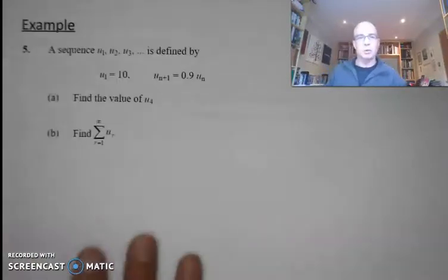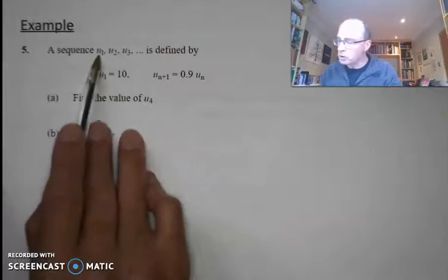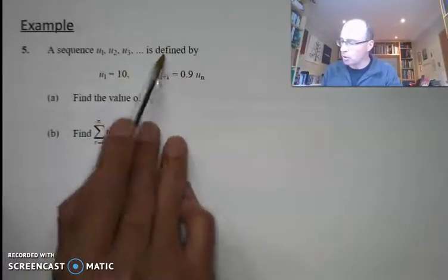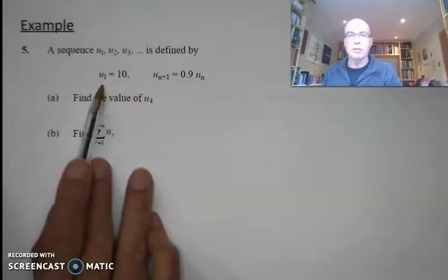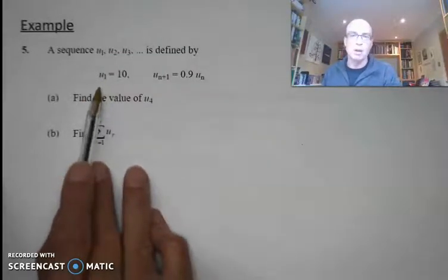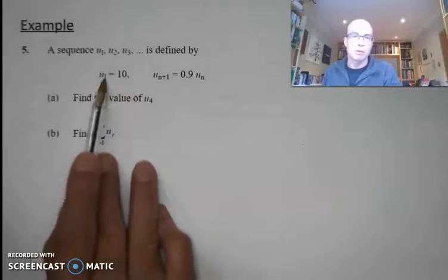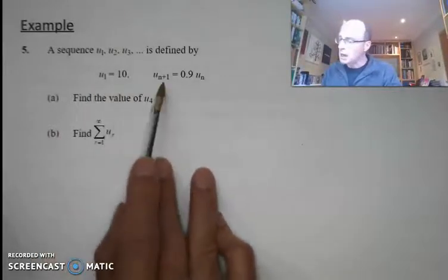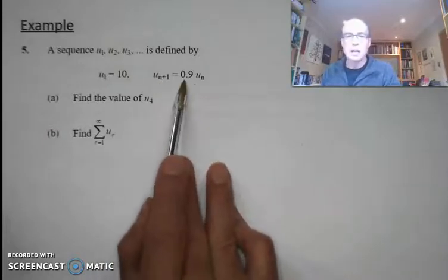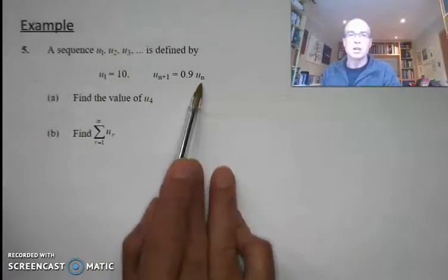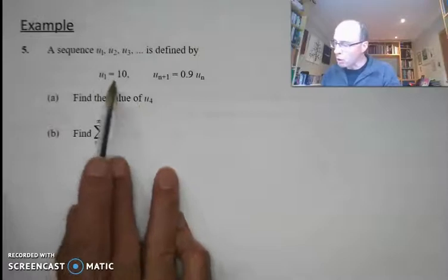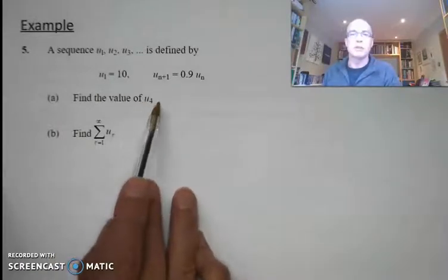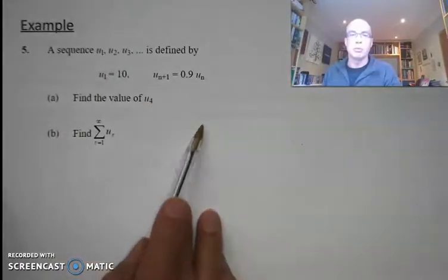Let's have a look at another example. We've got a sequence u1, u3 and so on. We've been given the first value in the sequence — remember I need to know one of the values, often it will be u1, sometimes they might give you u4 or something. We've got the relationship u_{n+1} equals 0.9 times u_n, the previous term. We've been asked to work out the value of u4, so with u1 given we're going to need to work out u2 and u3 before we can get to u4.